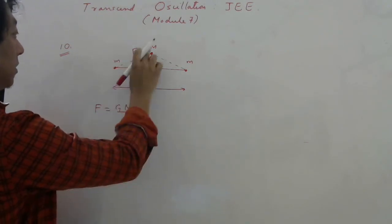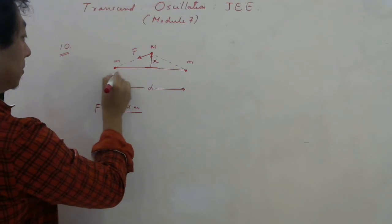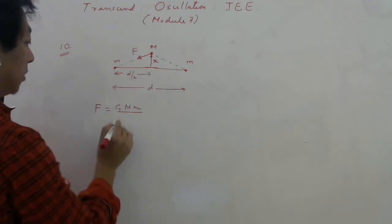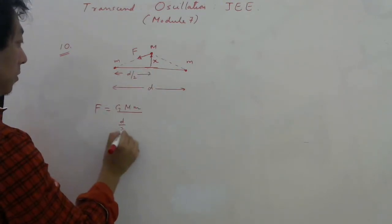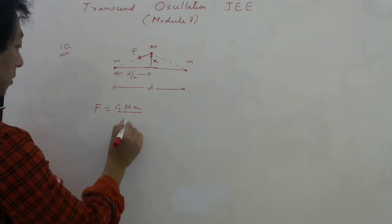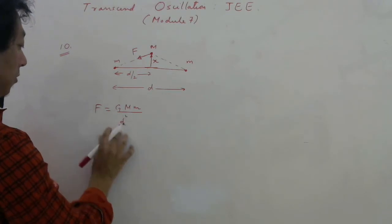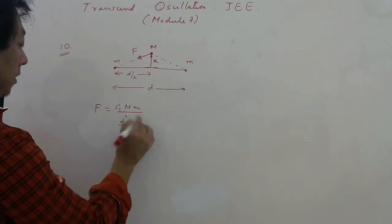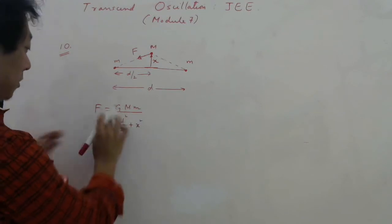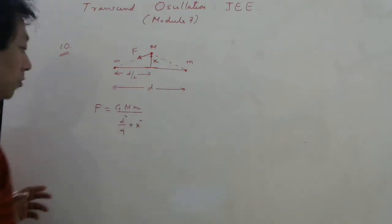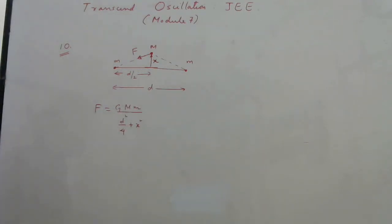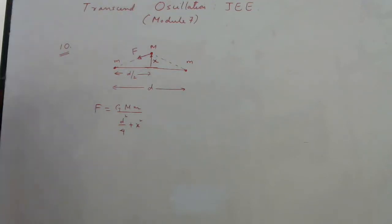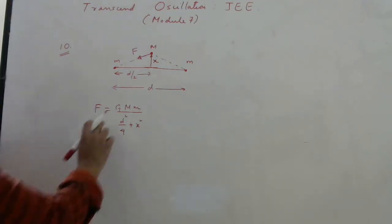F will be G·m·M divided by the distance squared. The distance is the hypotenuse: each fixed mass is d/2 from the center, and M is displaced by x, so the distance squared is (d/2)² + x² = d²/4 + x². So F = G·m·M / (d²/4 + x²). There is one such force from each fixed mass.